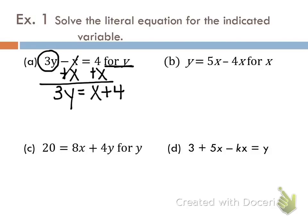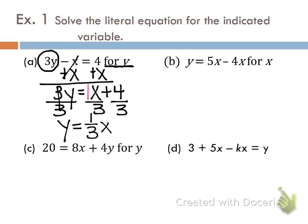Now we're not quite finished because y is still not by itself. This is 3 times y, which means we're going to divide each and every part of this problem by 3. So 3 over 3 is 1, so y equals... The understood number in front of any variable is a 1, so as we write down this final answer, that is the fraction 1 over 3, and then we drop the x down beside it. The final answer for this equation is y equals one-third x plus four-thirds. That is a literal equation solved for y.